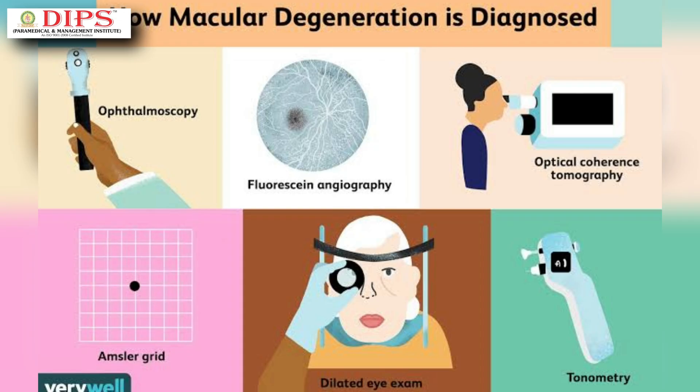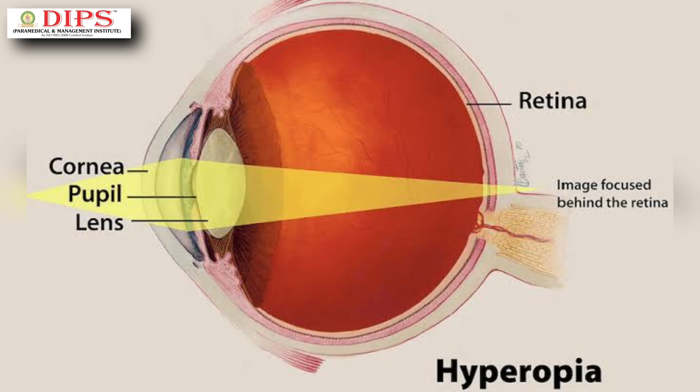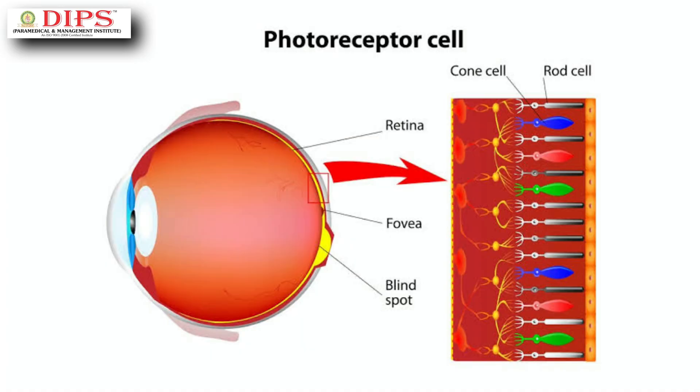A visual acuity test can help diagnose common conditions that affect your vision, including nearsightedness, farsightedness, astigmatism, and colorblindness.